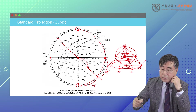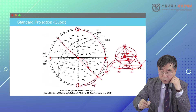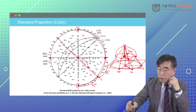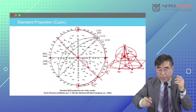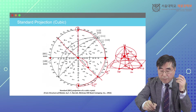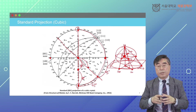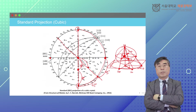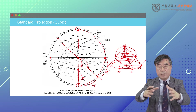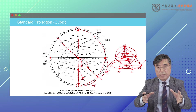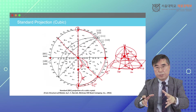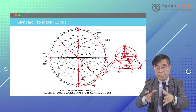Let me explain one more thing. From the 001 pole and 100 pole, if you move about 45 degrees from these lines, then there is a 101 pole in here. This angle is 45 degrees and this angle is 45 degrees. So if you look at any crystallography textbooks, there are these stereographic projections, and now you understand what the stereographic projection of a certain crystal system means.